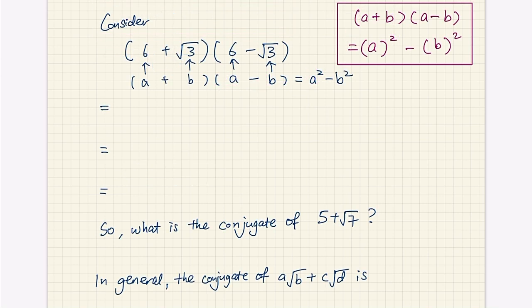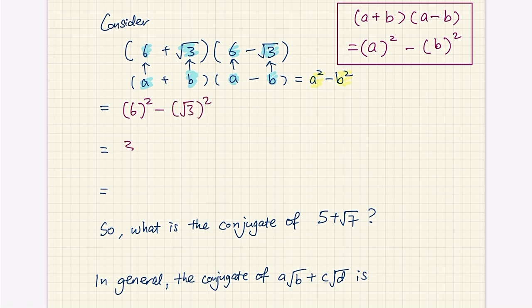Consider the following multiplication: 6 plus root 3 multiplied with 6 minus root 3. If we treat the 6 in both brackets as A and root 3 as B, we have A plus B multiplied with A minus B, which gives us the difference of two squares: A squared minus B squared. So we get 6 squared minus root 3 squared, which is 36 minus 3, giving us the rational number 33.